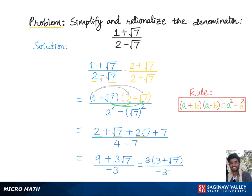We are left with (3 + √7) over negative 1, which equals negative 3 minus √7 — that is the final answer. As we saw at the end, factoring any expression if possible is always a good idea, as we can see if any expressions cancel each other out to give a reduced, simpler form.